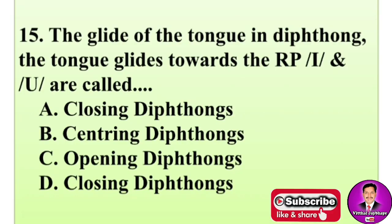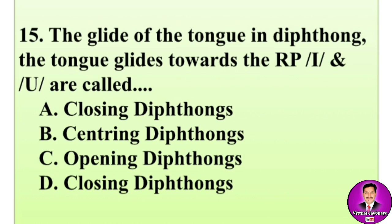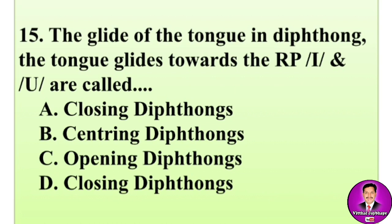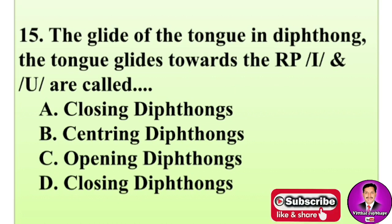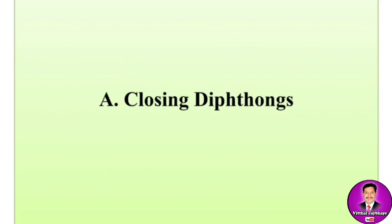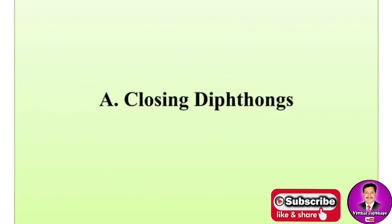Next MCQ: In diphthongs where the tongue glides towards the received pronunciation /i/ and /u/, these are also called — options are: A, closing diphthongs; B, centering diphthongs; C, opening diphthongs; D, closing diphthongs. The correct answer is A — closing diphthongs. Gliding towards /i/ and /u/ are called closing diphthongs.